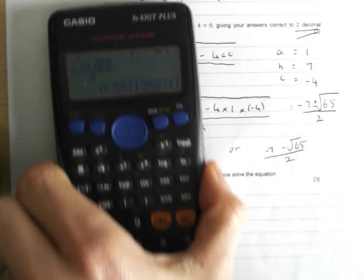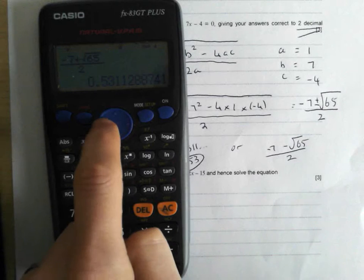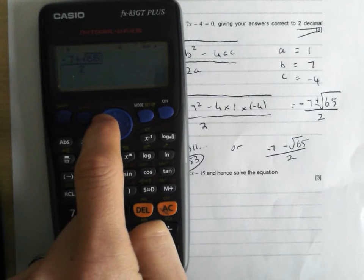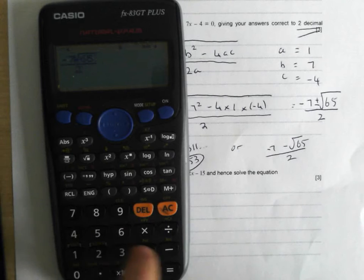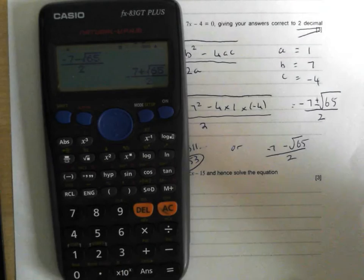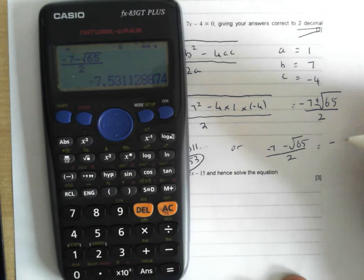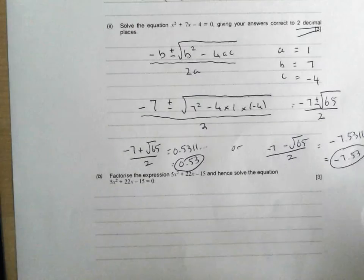And then if this is entered into your calculator, you can actually just hop back up and change your plus to a minus. Saves you a bit of time. And that's going to equal SD button minus 7.5311, to two decimal places minus 7.53, is looking quite good for that one.